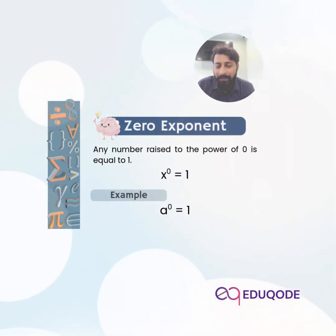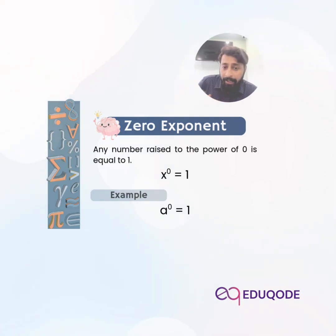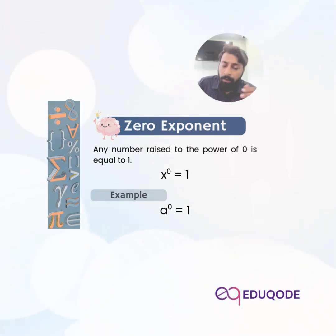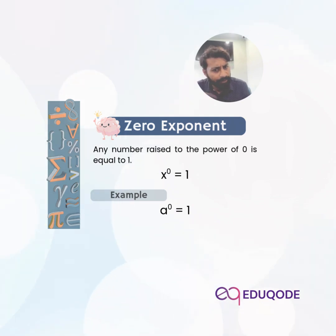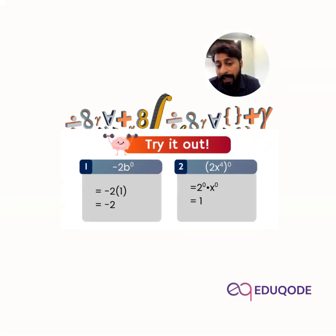Today we discuss the zero exponent rule. Any number or variable raised to power zero is always equal to one. For example, x power zero is equal to one, and a power zero is equal to one.